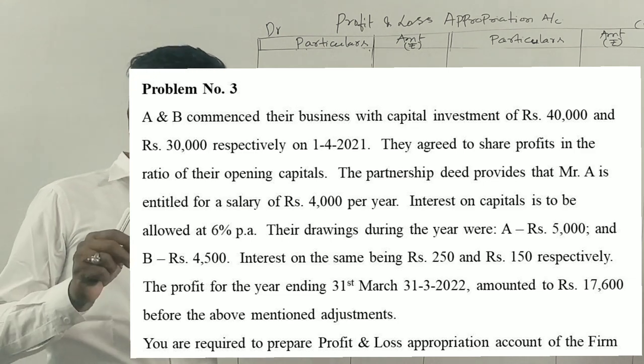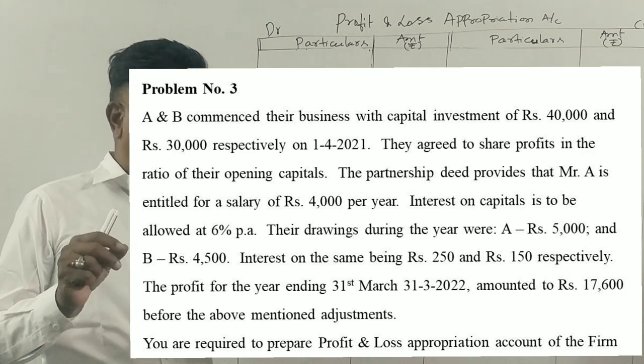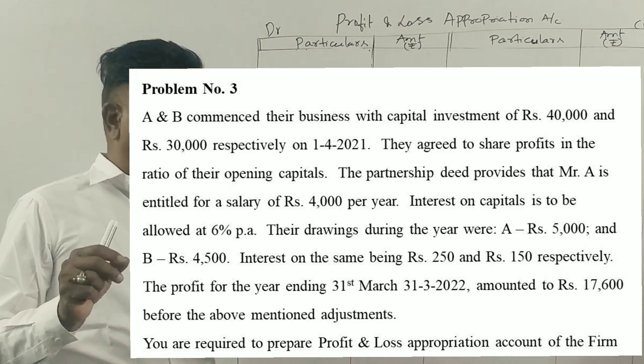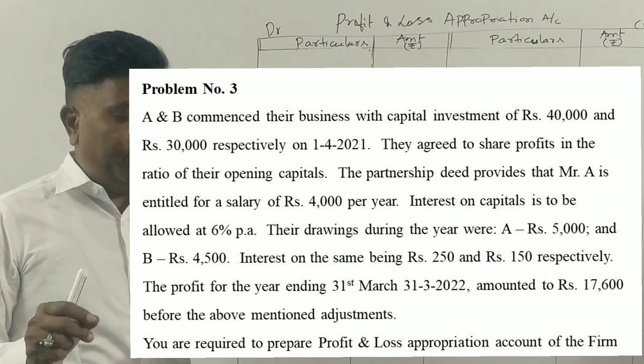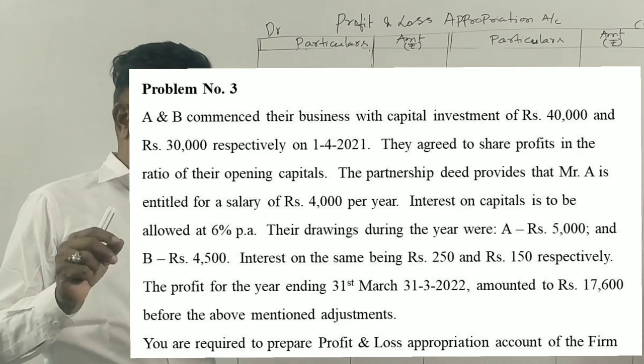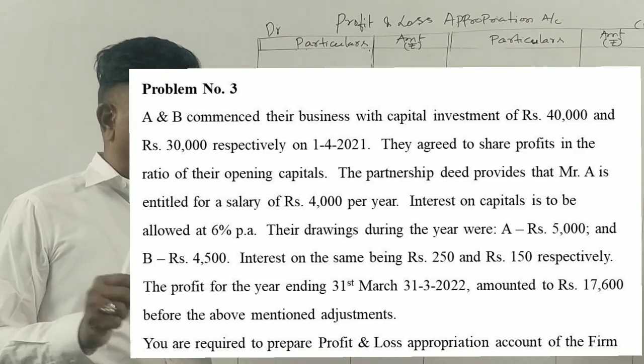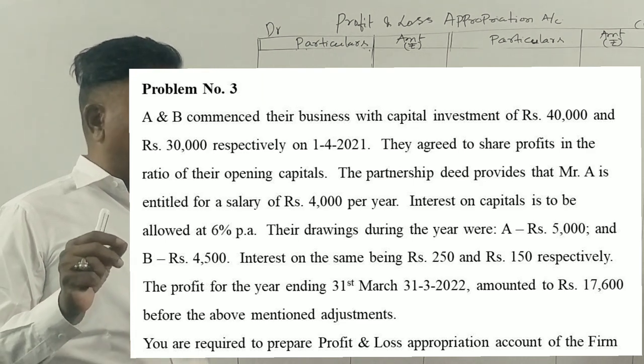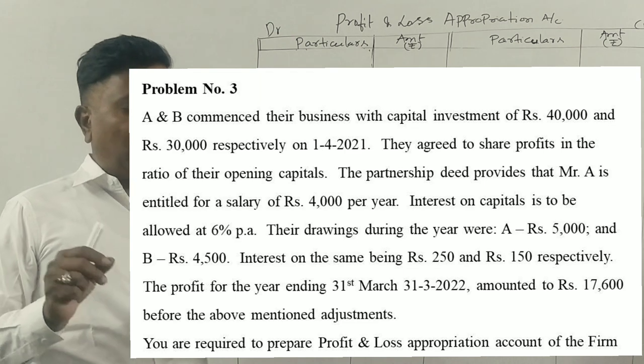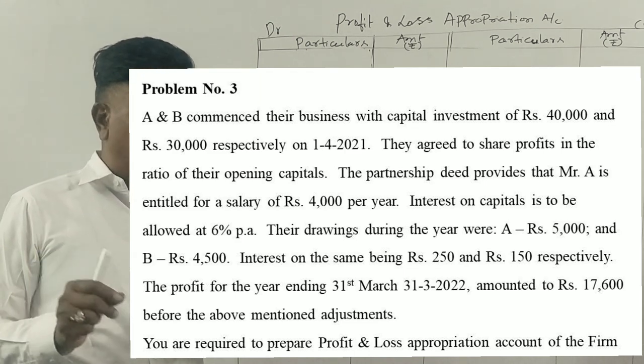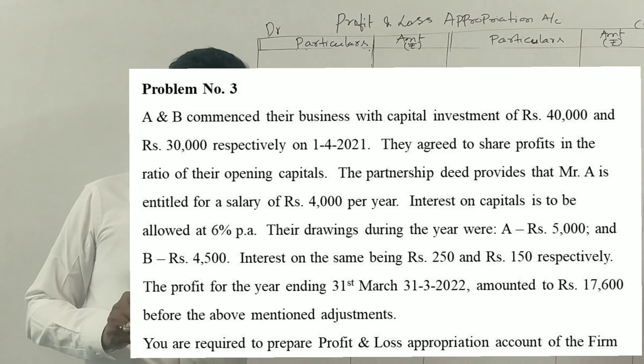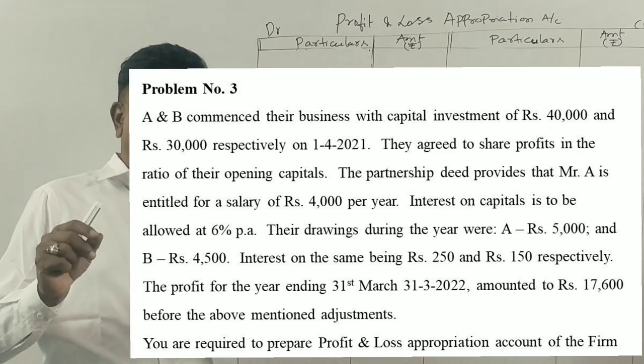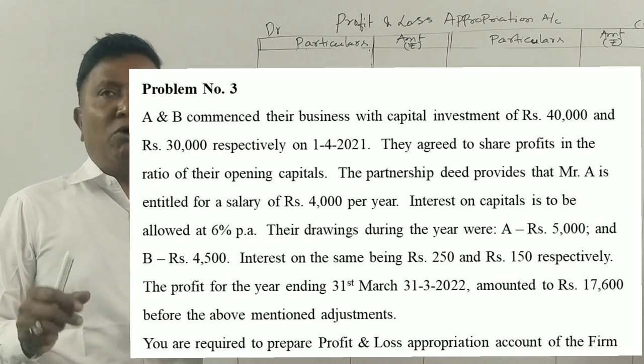They agreed to share the profits in the ratio of their opening capital. The partnership deed provides that Mr. A is entitled to a salary of Rs. 4,000 per year. Interest on capital is to be allowed at 6% per annum. Their drawings during the year were A Rs. 5,000 and B Rs. 4,500. Interest on the same being Rs. 250 and Rs. 150 respectively. The profit for the year ending 31st March 2022 amounted to Rs. 17,600 before the above adjustments.